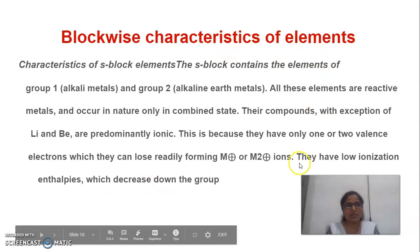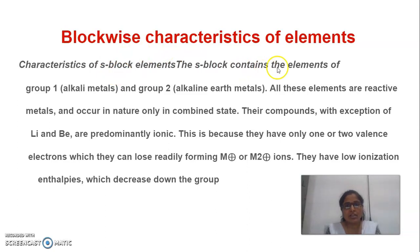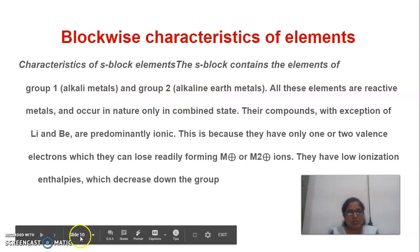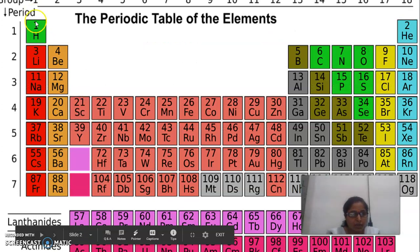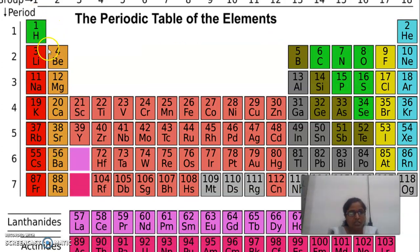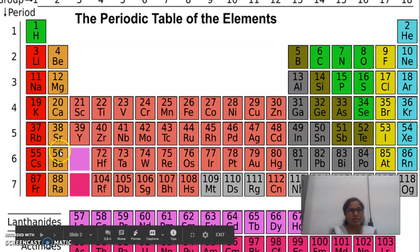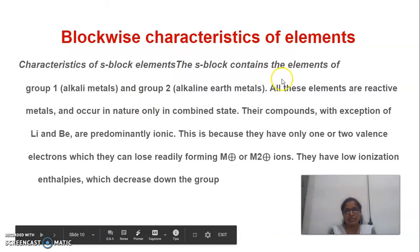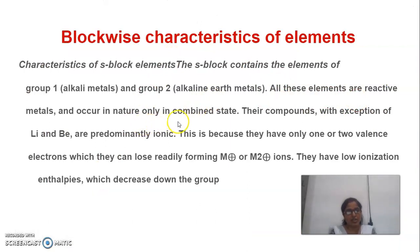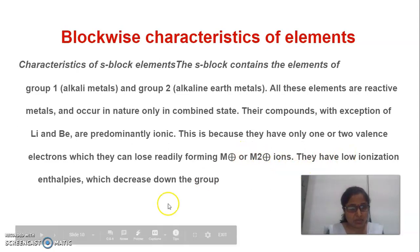Block-wise characteristics of elements. The S block contains the elements of groups 1 and 2 — alkali metals and alkaline earth metals. Alkali metals: Lithium, Sodium, Potassium, Rubidium, Caesium, Francium. Alkaline earth metals: Beryllium, Magnesium, Calcium, Strontium, Barium, Radium. S block elements are reactive metals that occur in nature only in the combined state. Their compounds are predominantly ionic because they have only one or two valence electrons — forming M⁺ or M²⁺ ions. They have low ionization enthalpy, which decreases down the group.